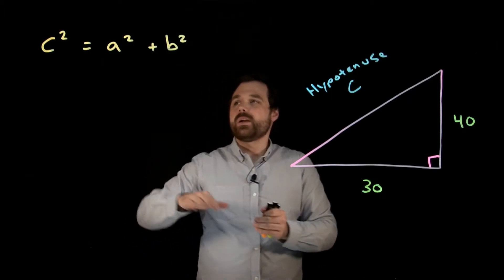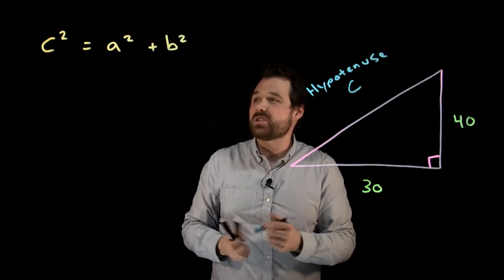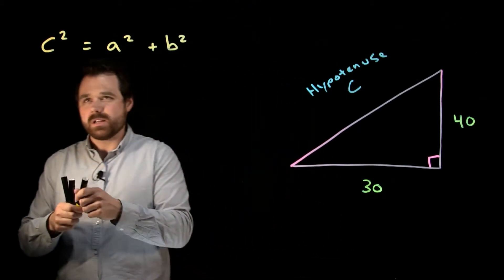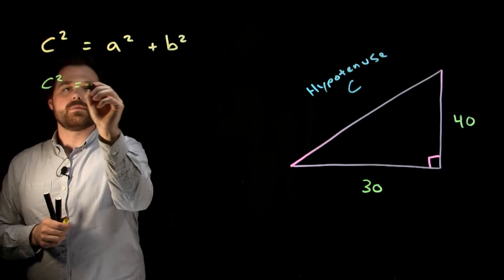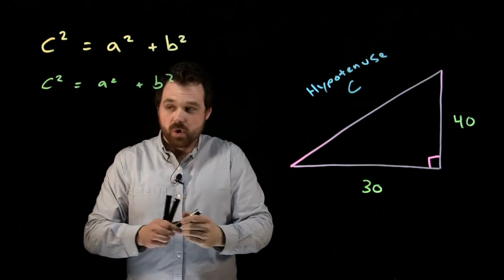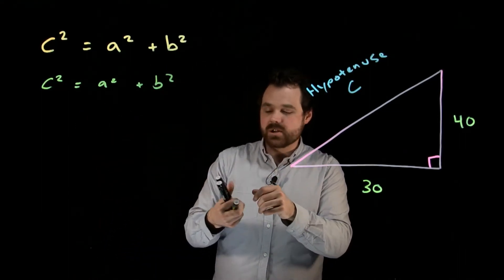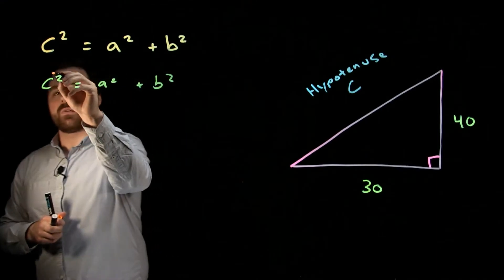At the end of the day, we are looking for C on its own. So we're going to take that formula of C squared equals A squared plus B squared. We're looking for C on its own, not squared, meaning we actually are going to square root C.